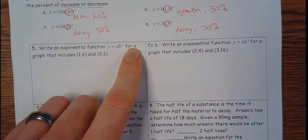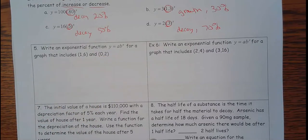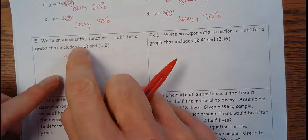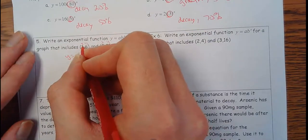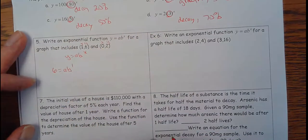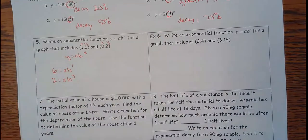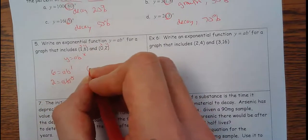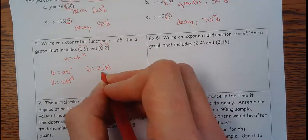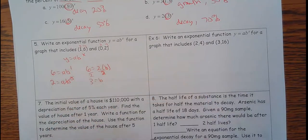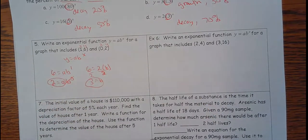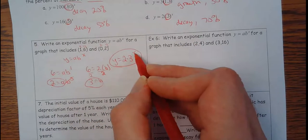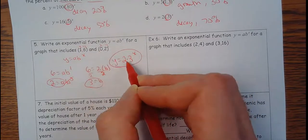Now write an exponential function, y equals a, b to the x for this graph. So I have a graph that goes through 1, 6 and through 0, 2. For these kind of questions, set it up like a system of equations. I know y equals a, b to the x. Plug in, here's an x, here's a y, here's another x, here's another y. So 6 equals a, b to the first, but also 2 equals a, b to the 0. Well, if you ever have a 0 involved, anything to the 0 power is 1. So that means a equals 2. So I can substitute that up here. So 6 equals 2 times b. And if I divide both sides by 2, b equals 3. So I've got a is 2, b is 3. So y equals 2 times 3 to the x power.